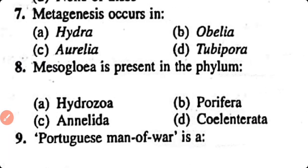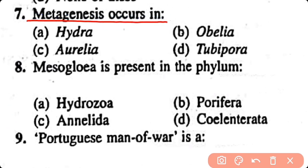Question number 7. Metagenesis occurs in: Hydra, Obelia, Aurelia, Tubipora. Correct answer is option B. Metagenesis is the alternation of generation, also known as polymorphism, and it is present in Obelia.